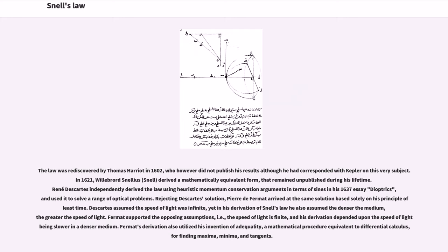Descartes used it to solve a range of optical problems. Rejecting Descartes' solution, Pierre de Fermat arrived at the same solution based solely on his principle of least time. Descartes assumed the speed of light was infinite, yet in his derivation of Snell's law he also assumed the denser the medium, the greater the speed of light. Fermat supported the opposing assumptions, that is, the speed of light is finite, and his derivation depended upon the speed of light being slower in a denser medium.